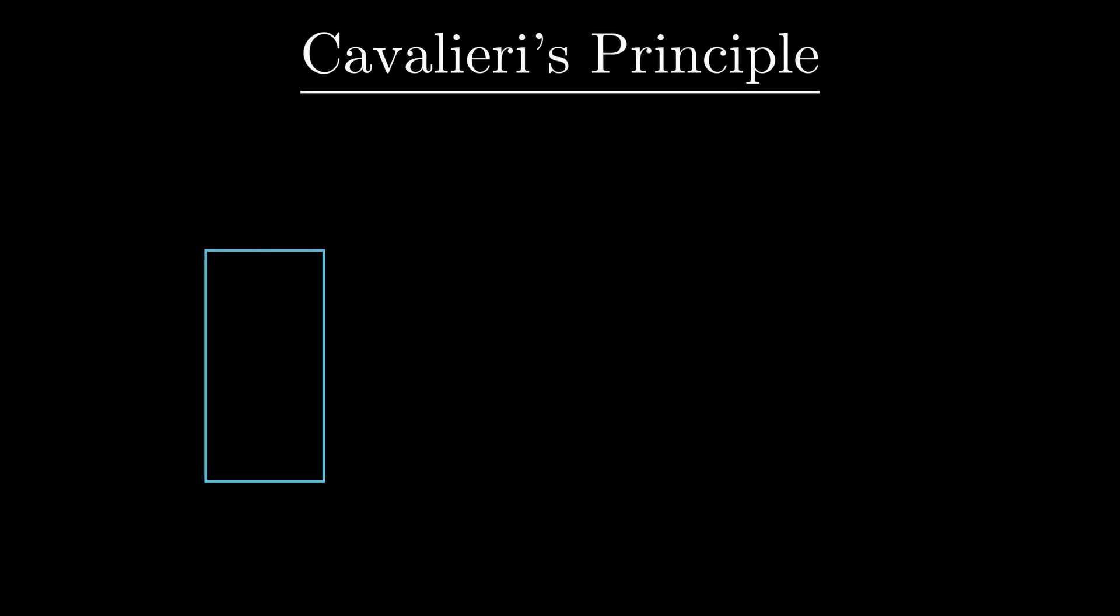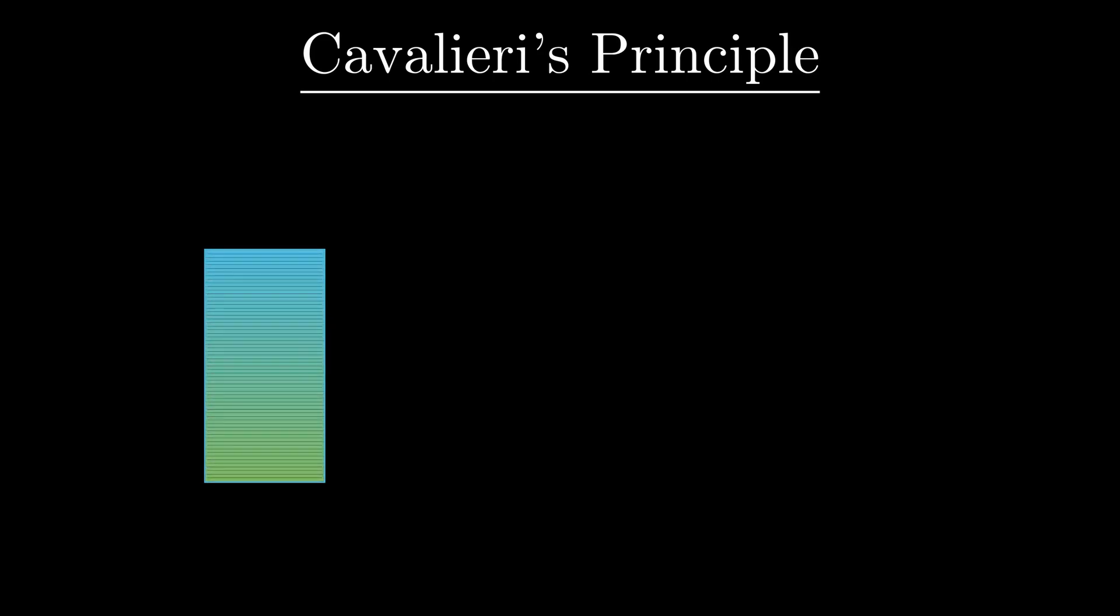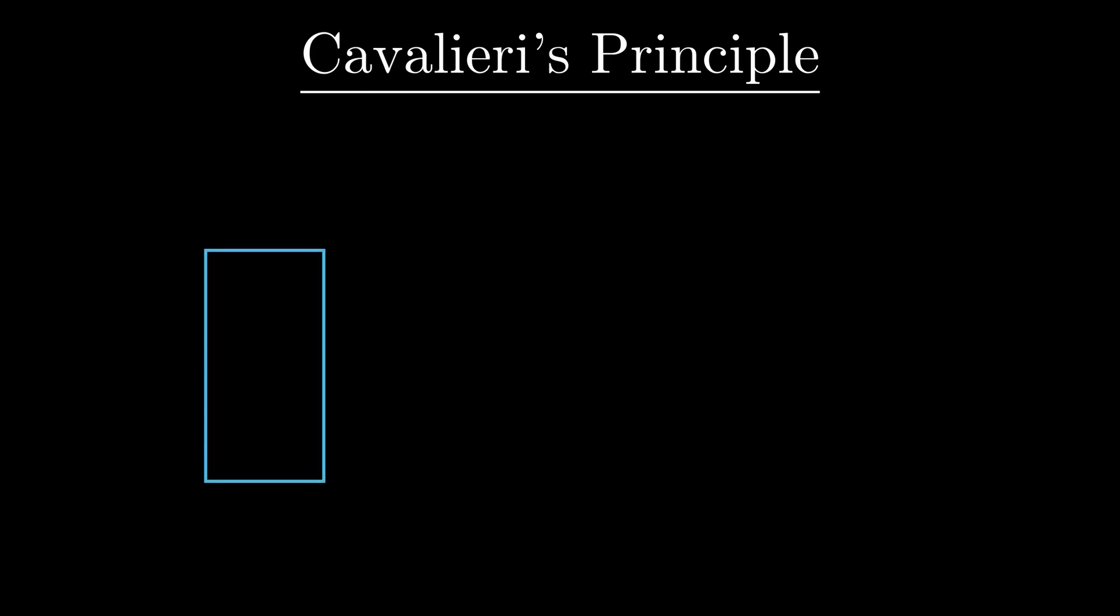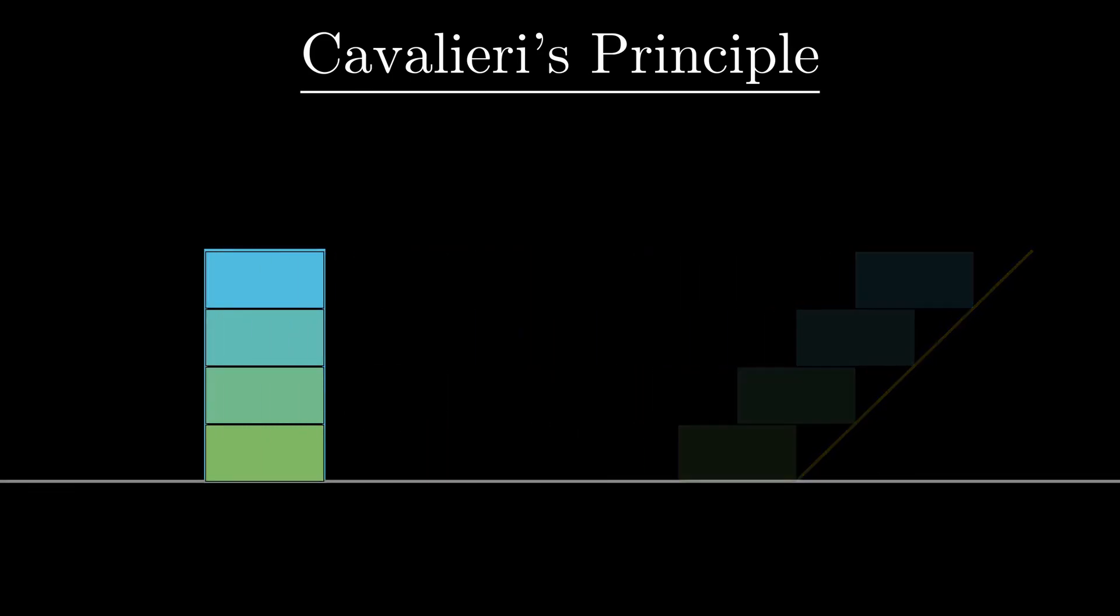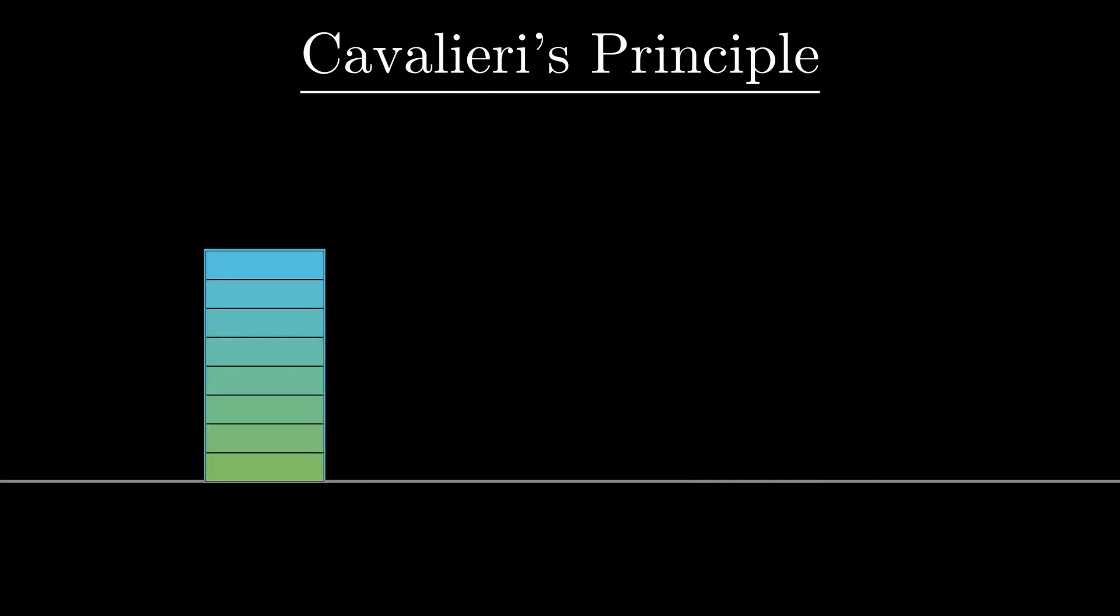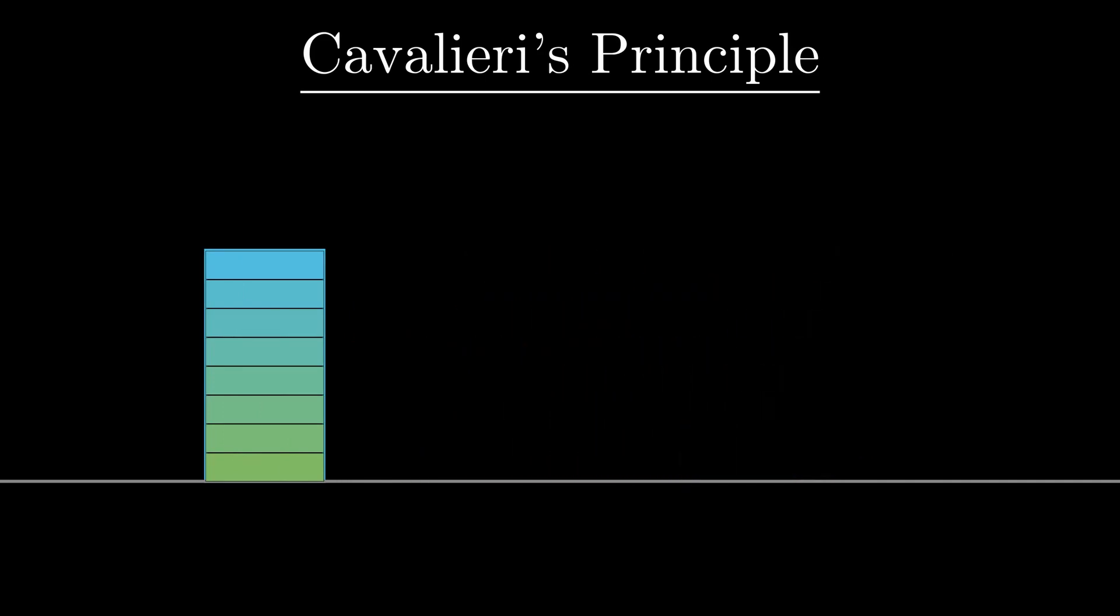To see how it works, consider a simple rectangle. If we divide this rectangle into smaller rectangles of the same width, then it should be obvious that the area of the original rectangle is the same as the sum of the areas of these smaller rectangles. The same remains true even if we horizontally move the rectangles such that the tips of the rectangles lie on a straight line, or even an arbitrary curve for that matter.